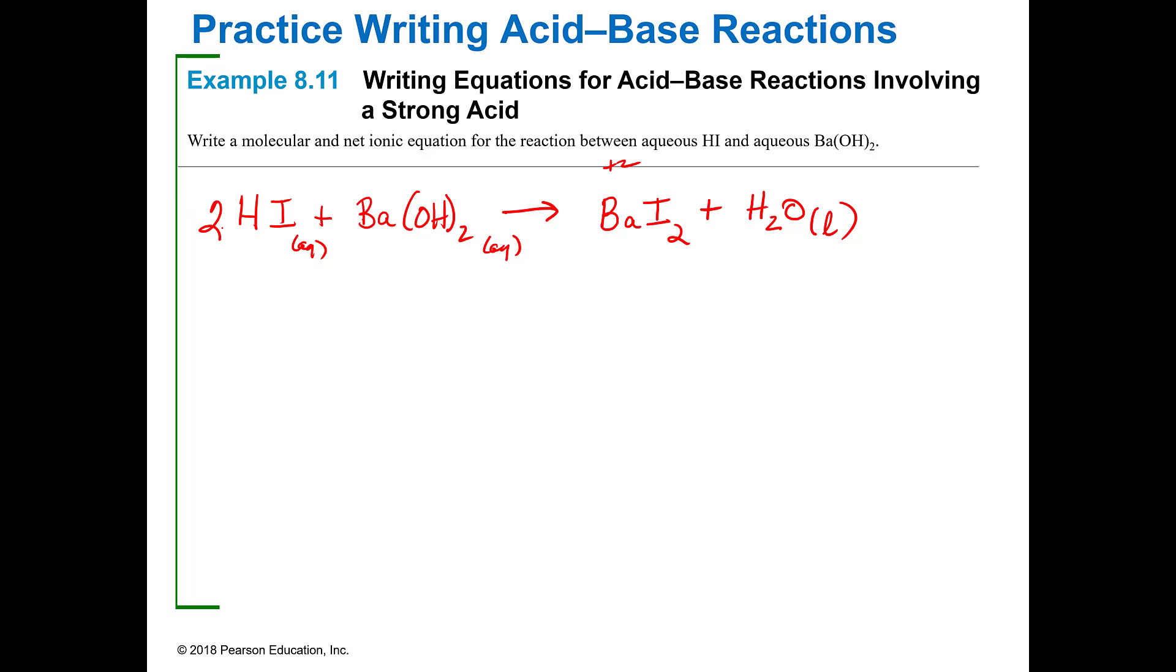So before I do the ionic equation I've got to balance it so I'm going to have 2 HI's, barium hydroxide, BaI2, and then on this side I'll need two waters to balance that. And if you need to take more time in balancing feel free, these typically are not super hard to balance.